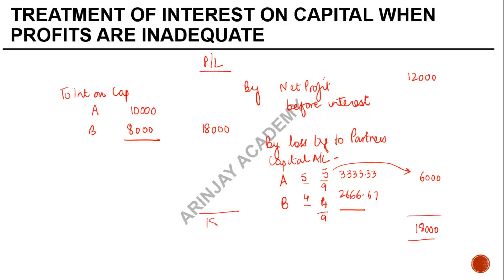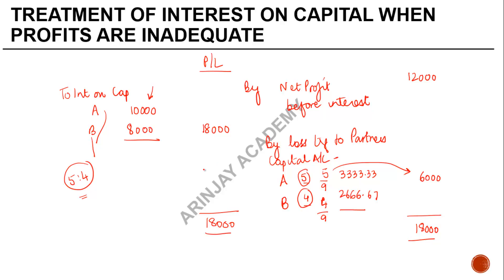Notice the difference between the two cases: first we gave interest to the partners in their entitlement ratio, then transferred the remaining loss in the profit-sharing ratio. In this example both happen to be the same ratio (5:4), but if they differed, there would be a difference in the partners' final shares. We hope you found this video useful. Subscribe to our channel, and for topic requests write to us at arinj2009@gmail.com.